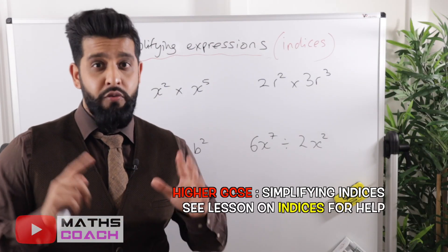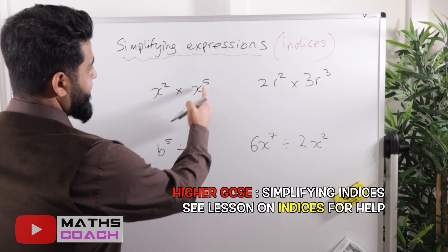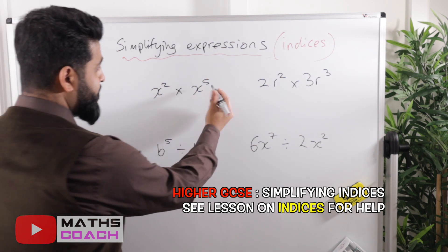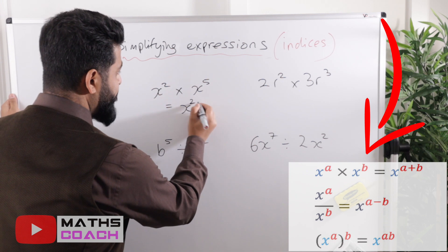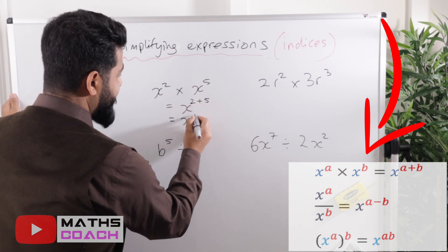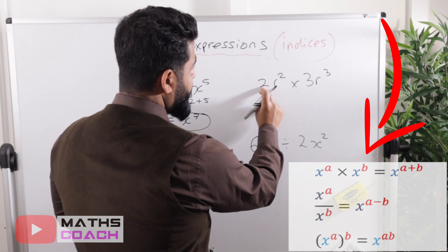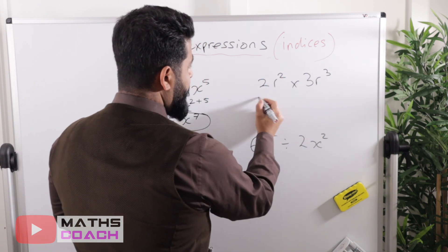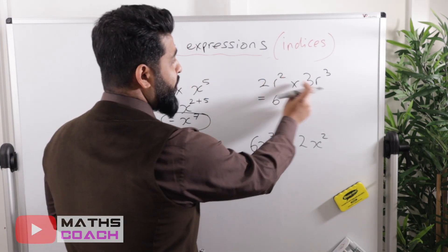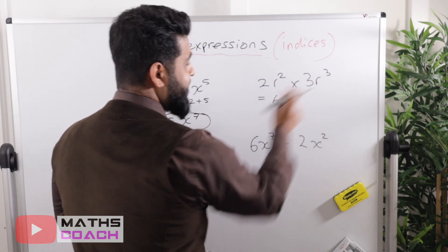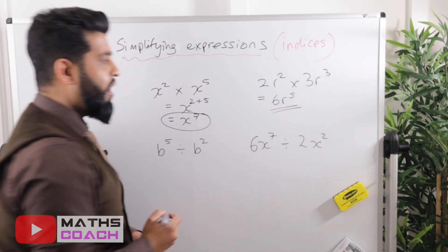Now we'll simplify expressions involving indices. I'll assume you know the rules, but check the indices video if needed. For multiplication: x² times x⁵ — the base is the same, so we add the powers: 2 plus 5 gives x to the power of 7. For 2r² times 3r³: multiply the coefficients normally, 2 times 3 equals 6, then add the index numbers, 2 plus 3 equals 5, giving 6r⁵.